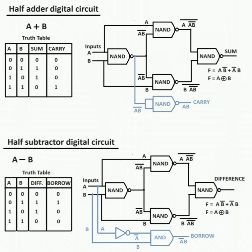For the half subtractor data circuit, a truth table is given for all options. The circuit uses 4 NAND gates for the difference, and 1 inverter and 1 NAND gate used for BORO. Difference is equal to A exclusive-or B, and BORO is equal to the complement of A multiplied by B.